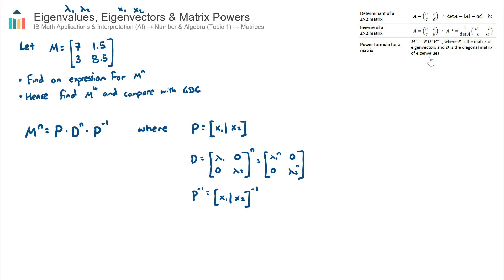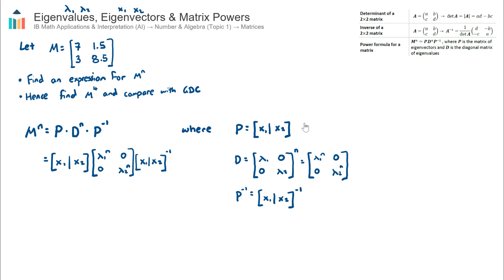A diagonal matrix means all values are zero apart from the leading diagonal — top left to bottom right — and those values are the eigenvalues of matrix M. Finally, we multiply by the inverse of P, the inverse of the eigenvector matrix. So M to the power of n for any given power will be a combination of eigenvectors and eigenvalues, with n appearing as the power on top of the eigenvalues in matrix D.